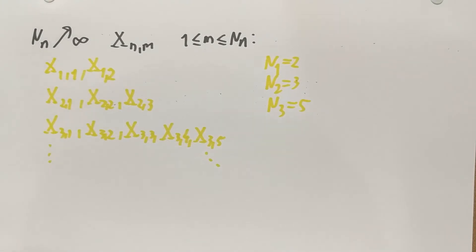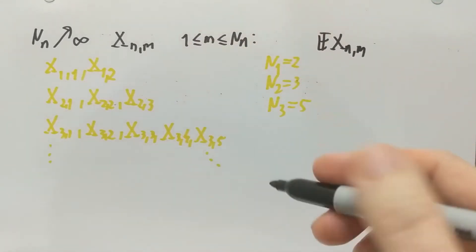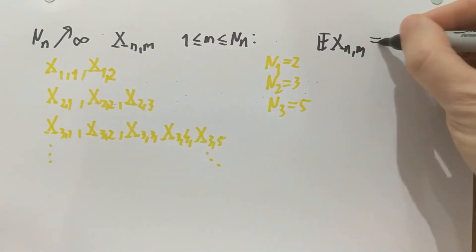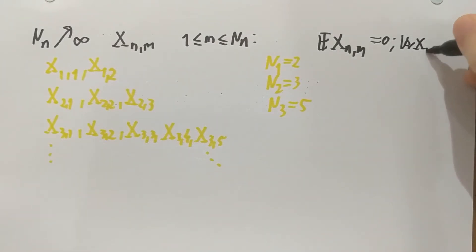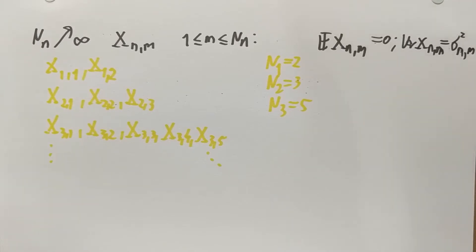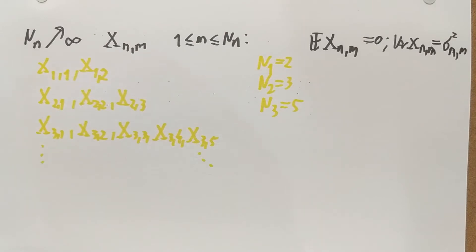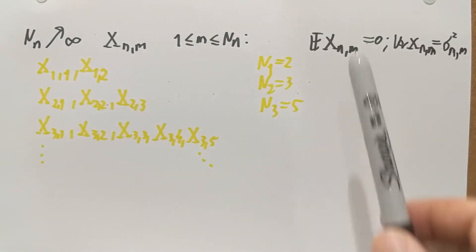Now the assumptions are the following. Each of these random variables has mean zero — E of x_{n,m} across all these triangular arrays is always zero. And they have a finite variance, each of them, which I'm going to call σ²_{n,m}. The point is that these random variables are not necessarily identically distributed — they don't have to have the same distribution. They each have mean zero, but the variance can differ from index to index.